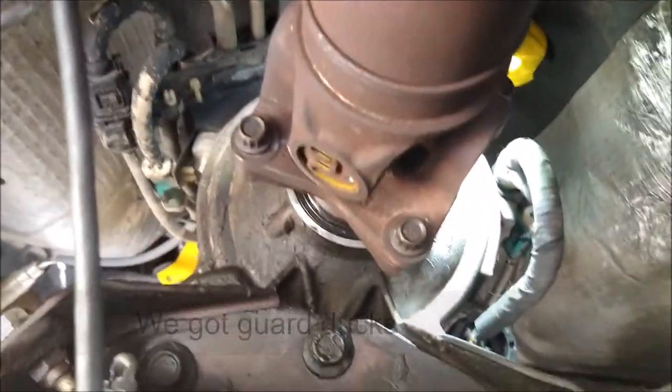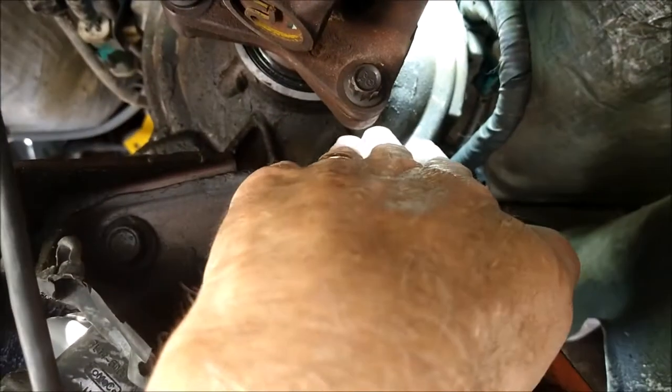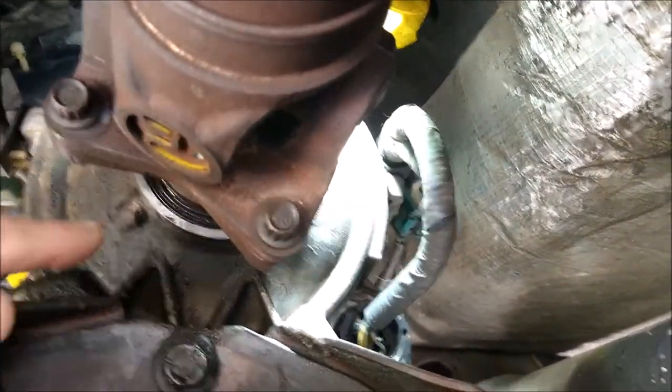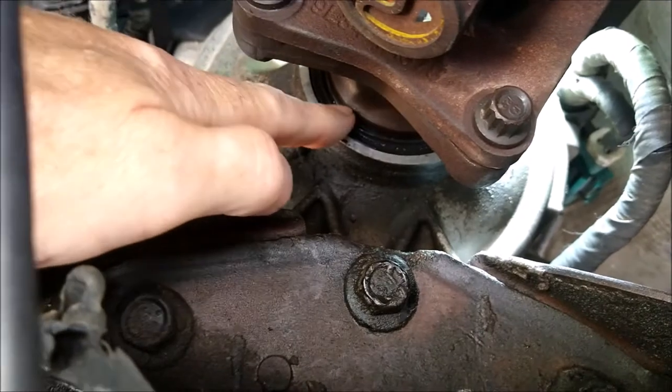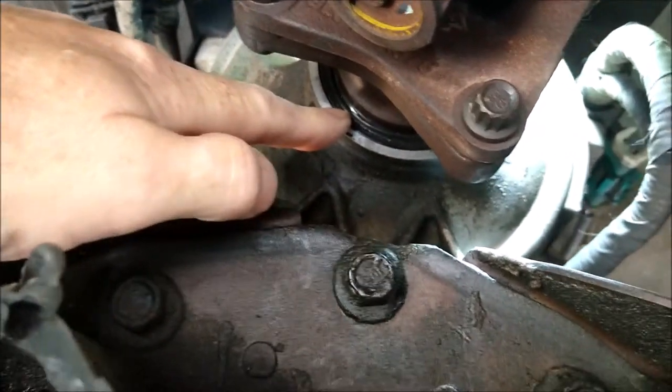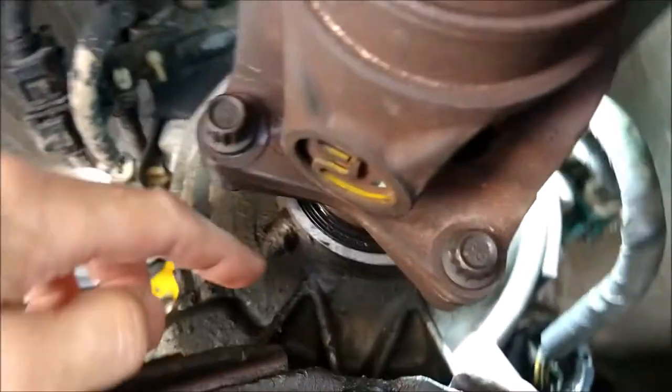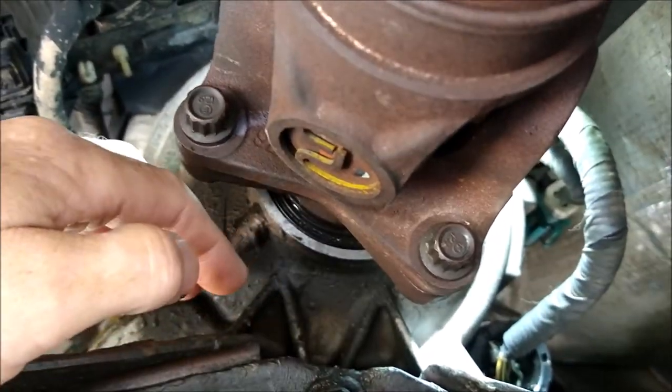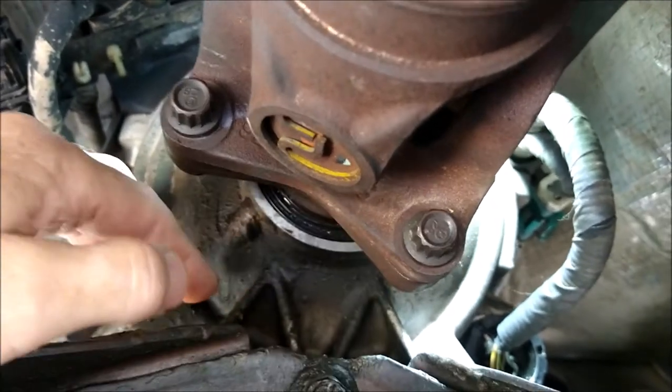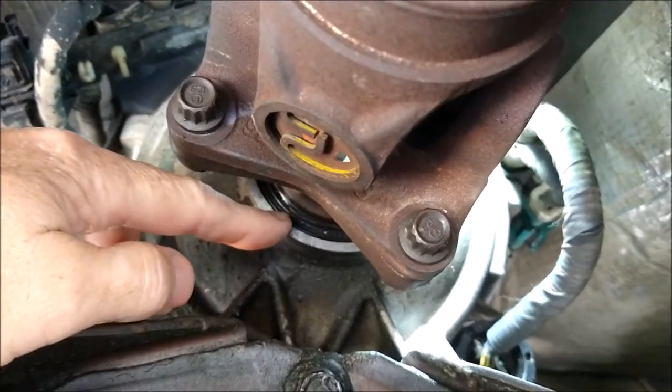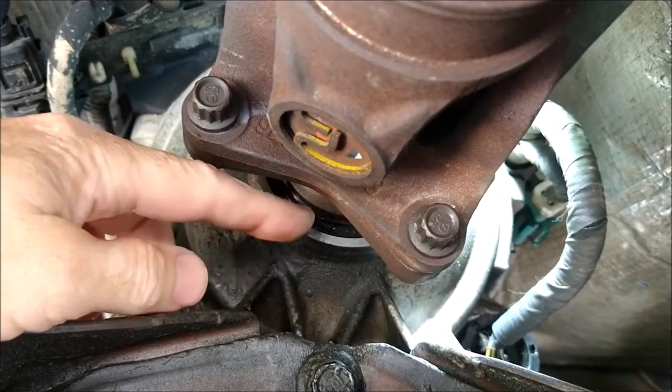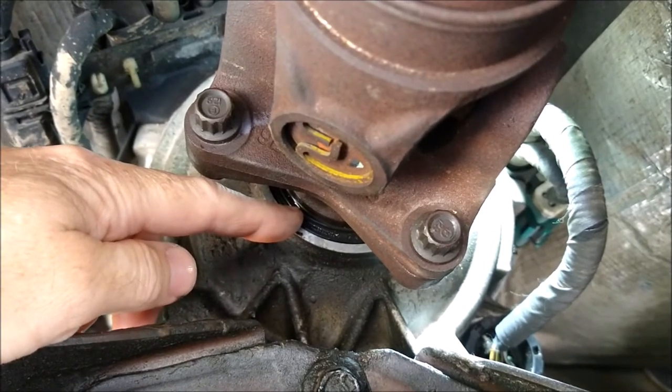All right folks, here we are under the truck. There's the transmission. The customer brought it over last week with the output shaft seal. He said 'Hey, I got a leak right here.' Yeah, sure enough, it was very cakey down here. We've cleaned it off some, but there was a lot of buildup right below this, so I knew that was leaking. We took off the drive shaft and pulled out the seal, inspected it.